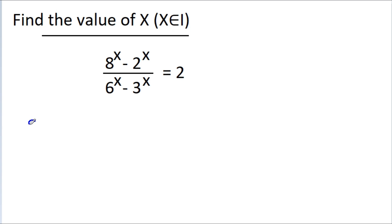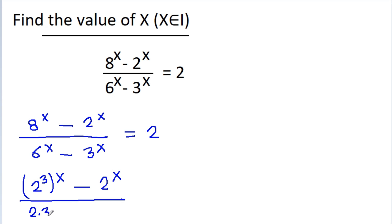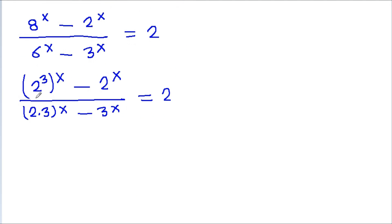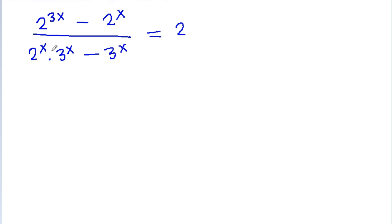So we have (8^x - 2^x) / (6^x - 3^x) = 2. Now 8 = 2³, so it becomes (2³)^x - 2^x in the numerator. And 6 = 2 × 3, so the denominator becomes (2×3)^x - 3^x. Expanding: (2^(3x) - 2^x) / (2^x · 3^x - 3^x) = 2. Taking 2^x common in the numerator and 3^x common in the denominator.